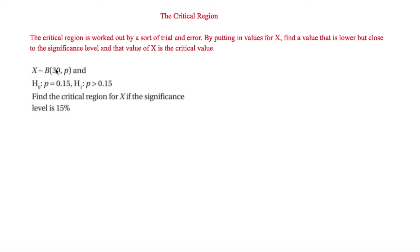We'll start off with the critical region. A critical region is worked out by a sort of trial and error — you have to put in values for x and find a value that is lower but also close to the significance level, and that value of x is the critical value. Here we say that x is binomially distributed B(30, p), the null hypothesis is p = 0.15, and the alternative hypothesis is that p is more than 0.15.